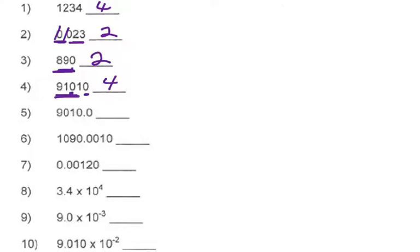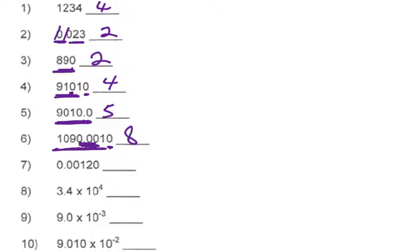Now this number right here has a trailing zero but there's a decimal, so that zero in the back is significant. All the numbers in front are also significant, so this number has five significant digits. Looking at this next number — 1,090,001 — all these digits are significant. These zeros are trapped between significant digits, this is a trailing zero and there is a decimal in the number, so everything is significant: 1, 2, 3, 4, 5, 6, 7, 8 — this number has eight significant digits.